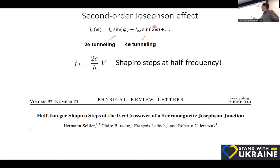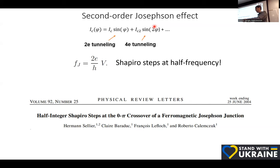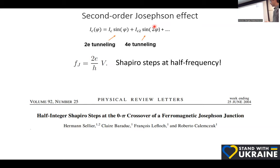If the junction has a sin(2φ) current-phase relation, you'd expect Shapiro steps at half the usual voltage spacing — half-integer steps. Since the Josephson relation is metrological, we can resolve this factor of two accurately. We'll look at a PRL from a Grenoble group that studied exactly this regime — the zero-π crossover — in SFS Josephson junctions with a ferromagnetic barrier.